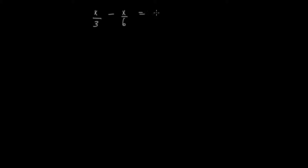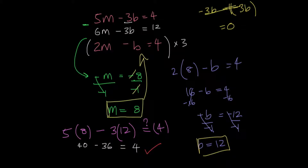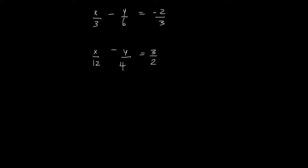Let's look at one more example here. If I have a fraction — I have x over 3 minus y over 6 equals negative 2 over 3, and x over 12 minus y over 4 equals 3 over 2. Now you might be looking at this and wondering how do I solve it — there's fractions. So what we want to try and do is we want to make both these fractional equations into linear equations.